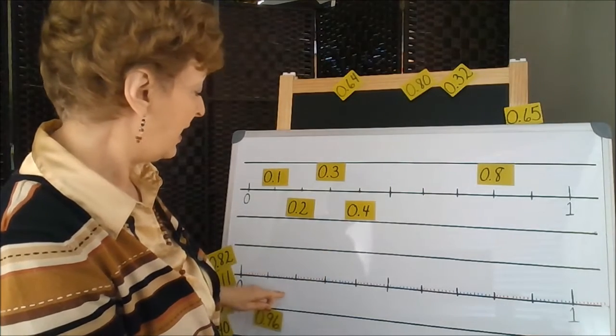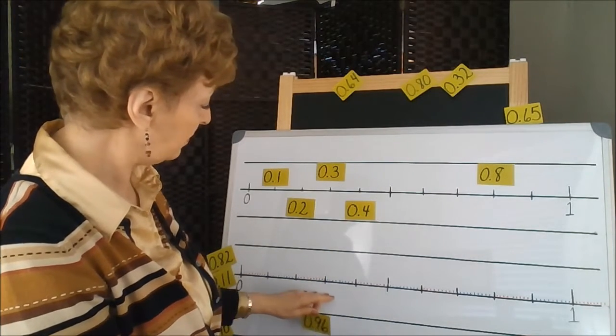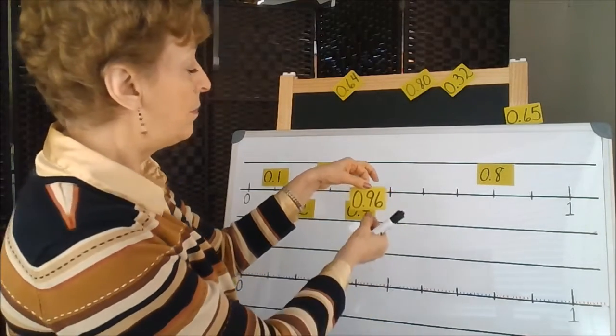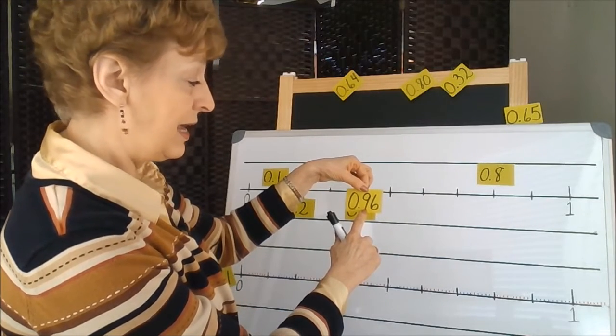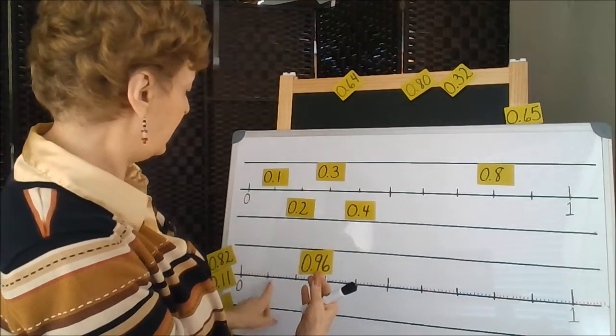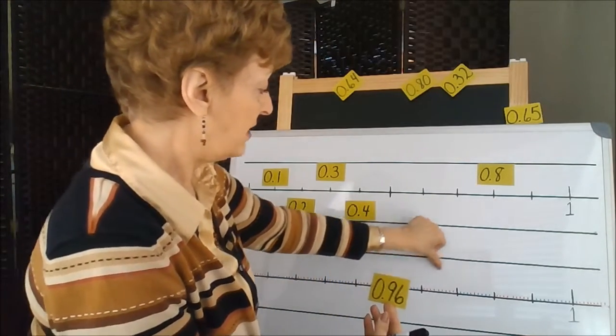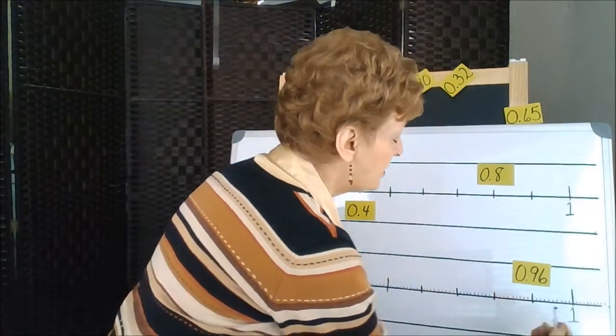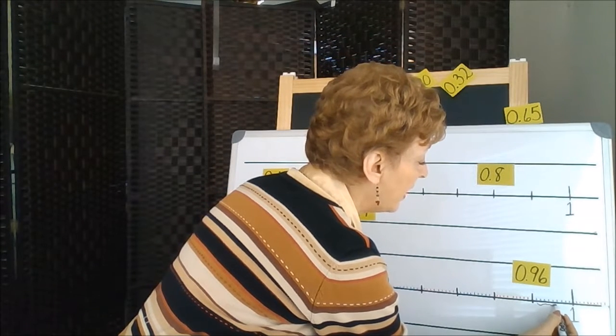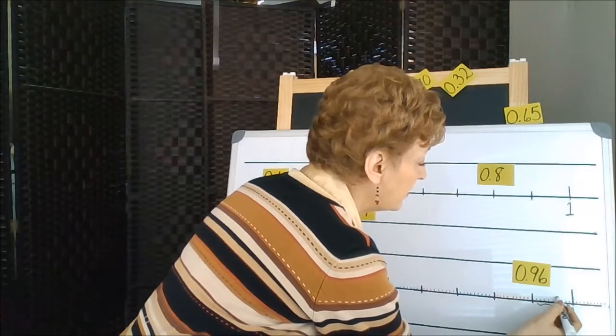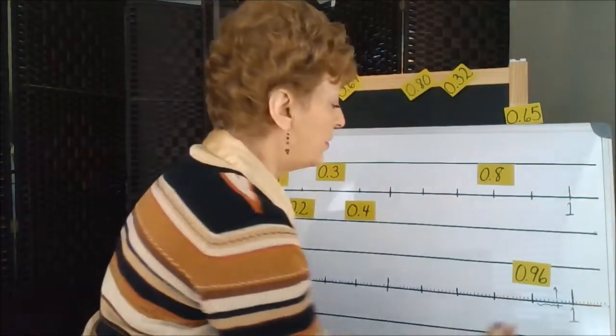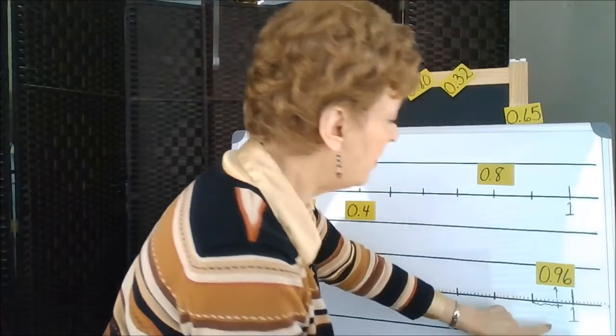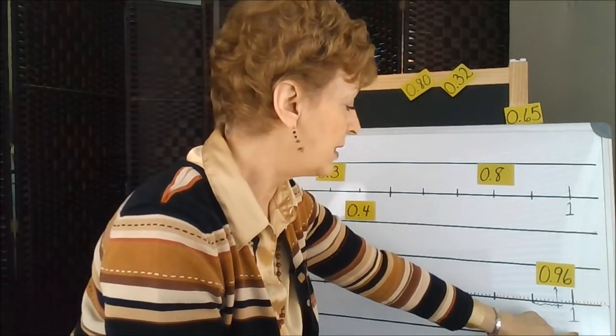We would have to count over 96 of these small little tiny pieces in order to place this particular card. But we can easily do it with decades of tenths going 10, 20, 30, 40, 50, 60, 70, 80, 90, and then count the smaller numbers in between. So this would be 1, 2, 3, 4, 5, 6. I only have to go to 6 here because this is 96. So this particular card would be placed at 0.96, way over here. It's almost at 1, the next whole number.